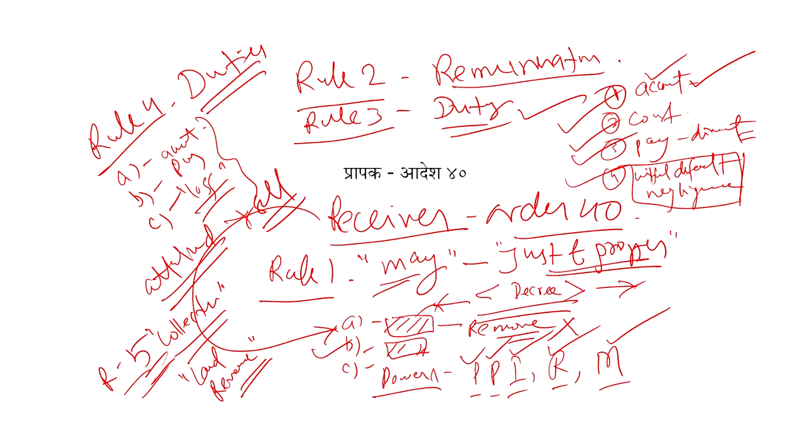Temporary injunction ki baat hoti hai — toh yeh tha Order 39. Iske baad aaya Order 40 — receiver. Toh receiver ko hum log ne dekha. Maine aapko bataya ki receiver kab — jab is tariqe ki situation ho ki property ka jo proceed hai, woh kis ke haath mein jaaye, kyunki property ki title abhi fix nahi hai — ki property A ki hai, ki B ki hai. Toh aakhir uski proceed, kis ke haath mein jaaye? Toh ahabandha jis ke haath mein proceed dena hai, usko hum praapak bolte hain, usko hum receiver bolte hain, jo Order 40 mein iski vivastah hai. Toh ek receiver hai, appoint kiya ja sakta hai — court may at any time, either before or after the decree. Decree ke baad ya decree ke pehle receiver appoint kar sakti hai, jab court ko lage kya just and convenient. Just and convenient ka rule hai — wide discretion hai, court ka personal perception hai — toh court ka discretionary right hai, or power hai, court mein.